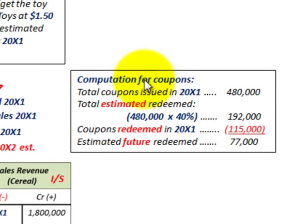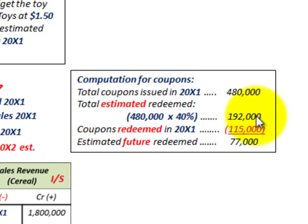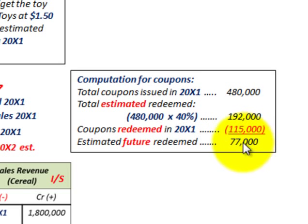For our computation: total coupons issued in 20x1 were four hundred eighty thousand — one coupon per box sold. The total estimated number to be redeemed is four hundred eighty thousand times forty percent, giving us one hundred ninety two thousand estimated redeemed. Coupons actually redeemed in 20x1 were one hundred fifteen thousand, so the difference — one hundred ninety two thousand minus one hundred fifteen thousand — gives us seventy seven thousand estimated future coupons to be redeemed.